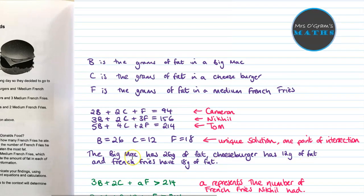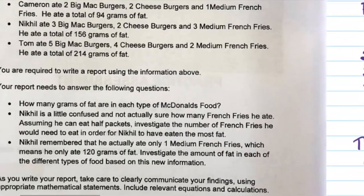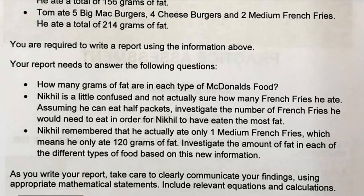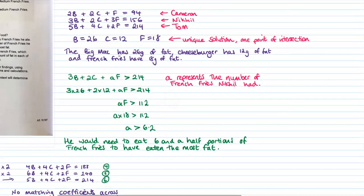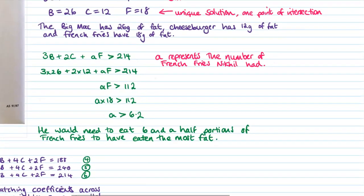So then we go back to the question. We see what happens next. So then Nicol's a little confused. He's not actually sure how many French fries he had. If we assume he can eat half packets, investigate the number of French fries he would need so that he's had the most fat. So back over to this bit. I've changed colour so we know we're on to the next section. It's the green bits here.